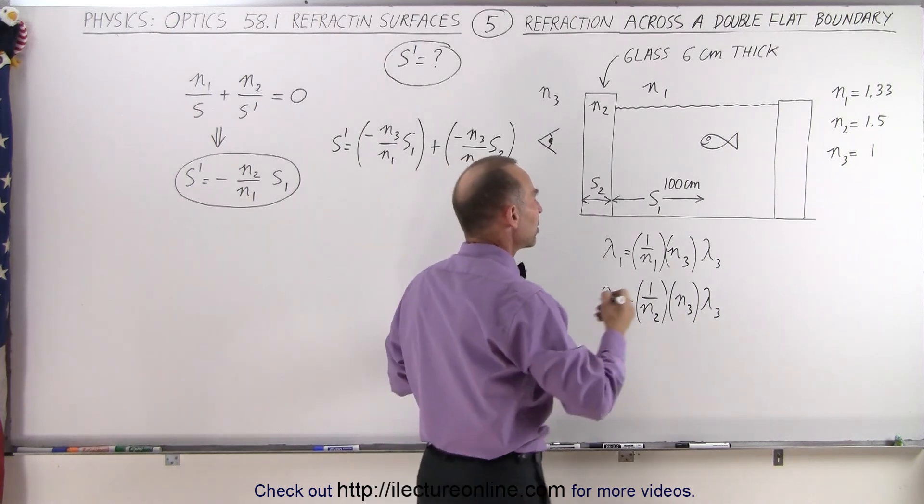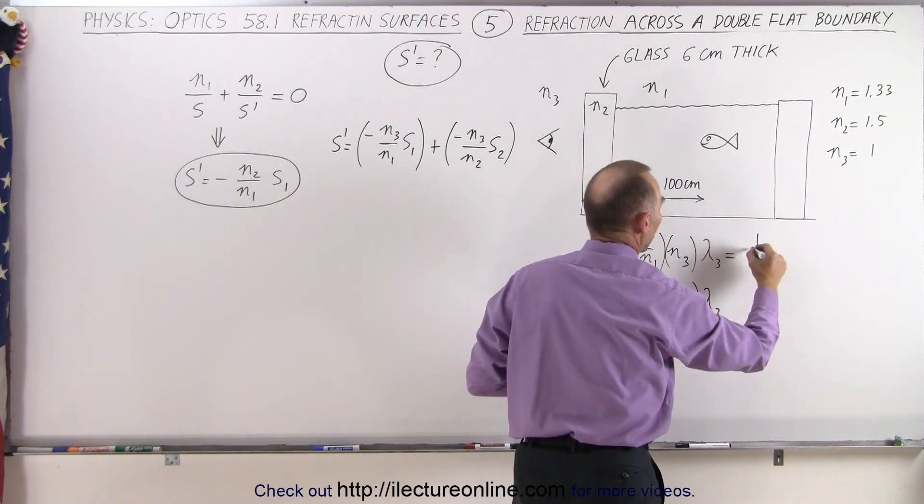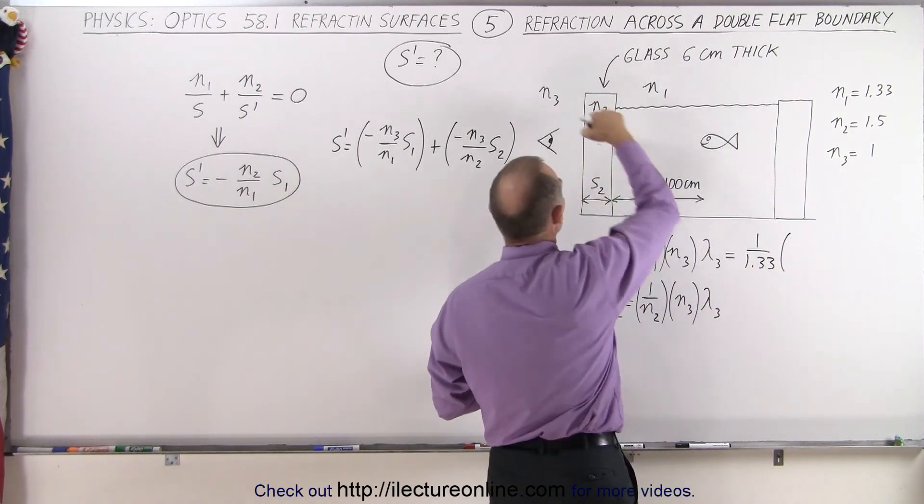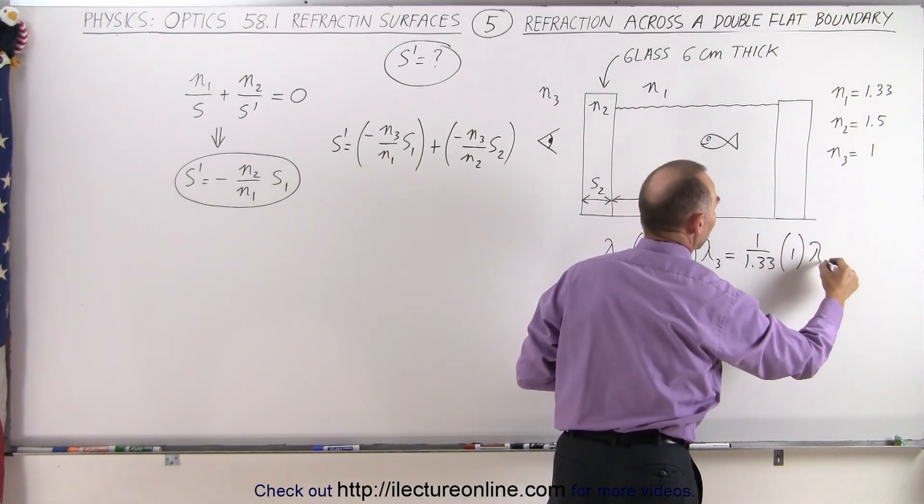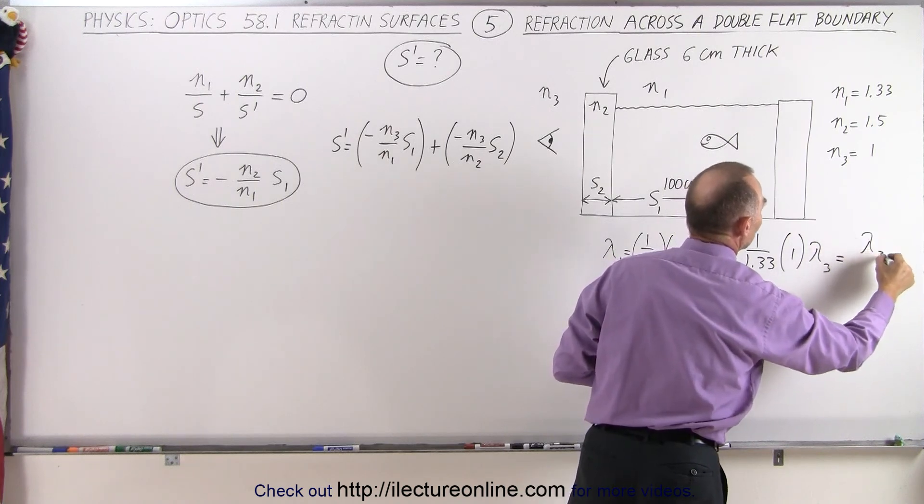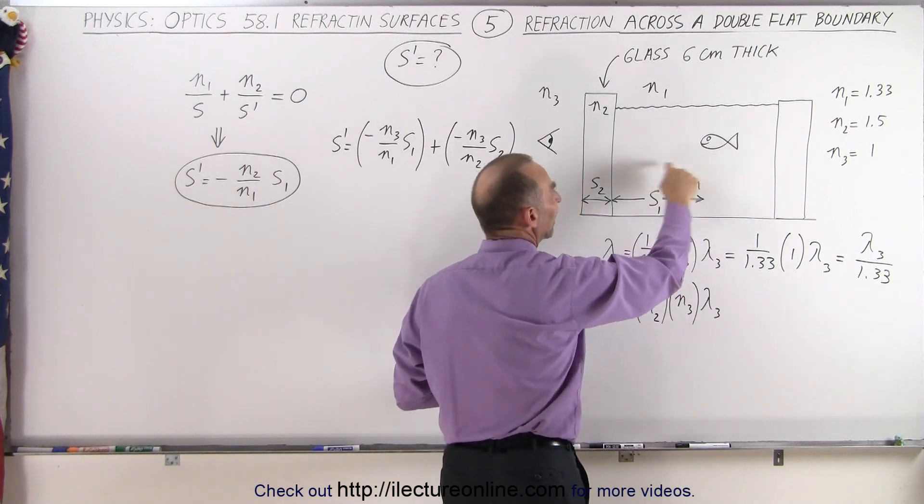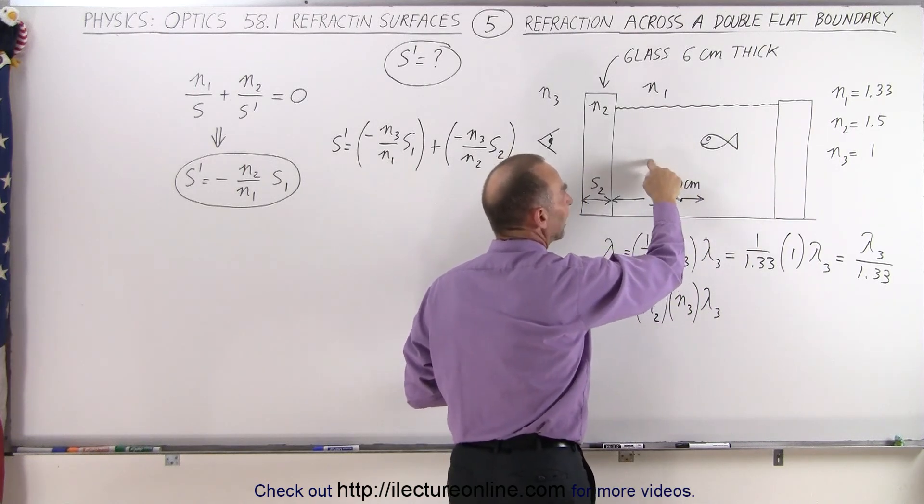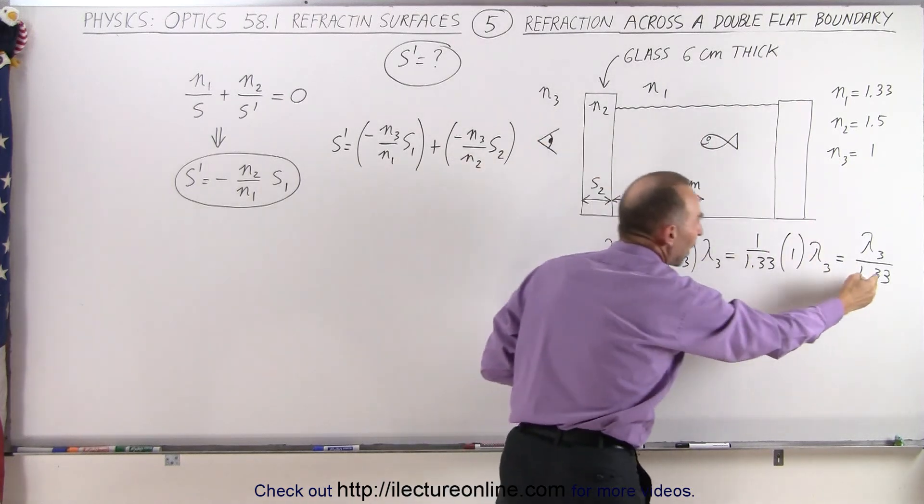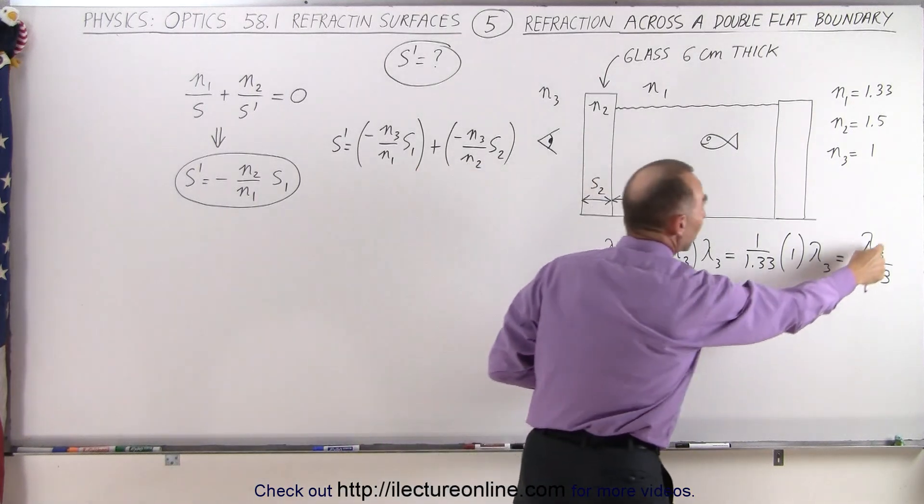So plugging in the numbers here you can see that this is going to be equal to one over N1, which is the index of refraction of water, times the index of refraction in region three, which is air, times lambda sub three. In other words, we can see that this is lambda sub three divided by 1.33. That means that the wavelength of the light traveling through the water is the same as the wavelength traveling through air divided by 1.33, or it's being reduced by a factor of 1.33 relative to the air.